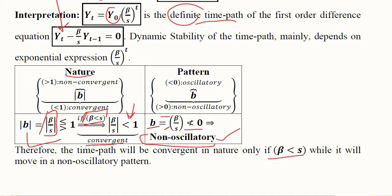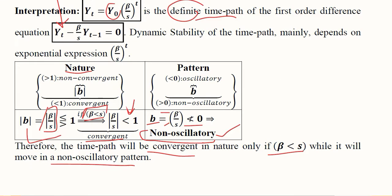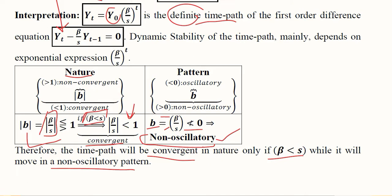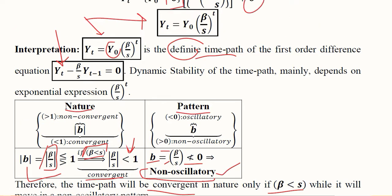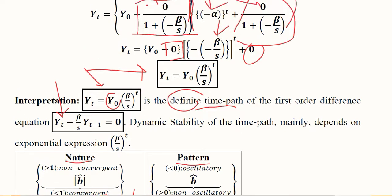So now we can say that if beta is less than s, it means we have a convergent time path and that would be non-oscillatory in nature. If numerical values are given, we can solve this and get more concrete answers. Here we discuss the nature and pattern of the time path that we developed in symbolic terms by equating s and i.